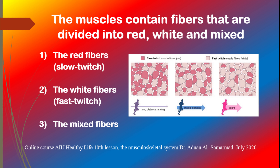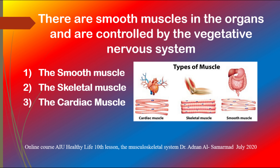The gluteal muscles are the biggest muscles of the human body, and the chew muscles are the strongest and can exert up to 80 kg of force. There are also smooth muscles, which can be found in the organs and are controlled by the vegetative nerve system — for example, the stomach and intestinal muscles, and the breathing muscles.